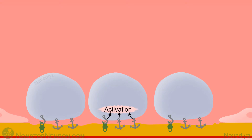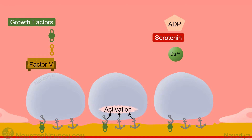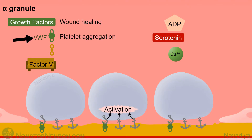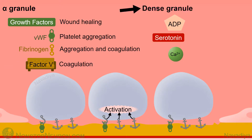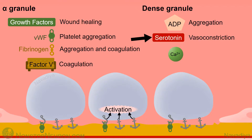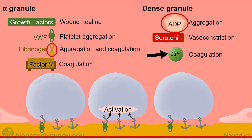Binding of these receptors activates the platelet. Platelets have storage vesicles like alpha and dense granules. Upon activation, contents of these granules are released into the surroundings. Contents of alpha granules include various growth factors which carry out wound healing, von Willebrand factor which contributes in platelet aggregation, fibrinogen which contributes in aggregation as well as coagulation, and factor V which contributes in coagulation. Contents of dense granules are ADP which helps in platelet aggregation, serotonin which causes vasoconstriction, and calcium which contributes in coagulation.